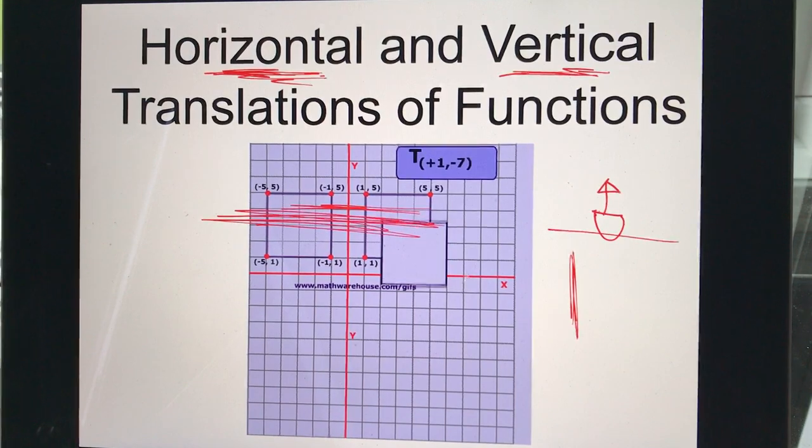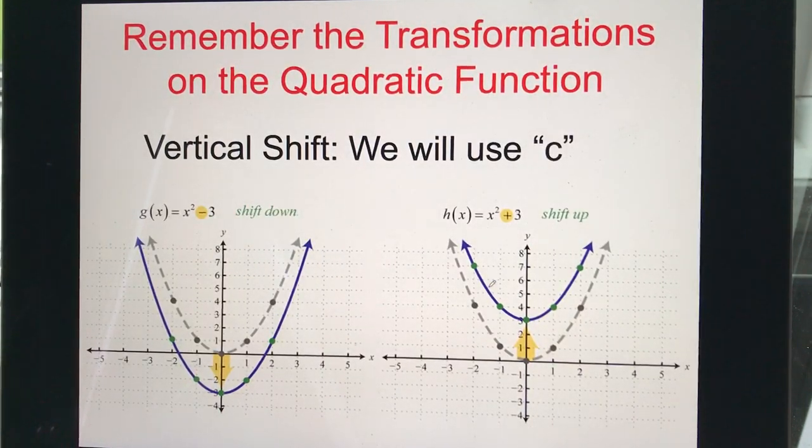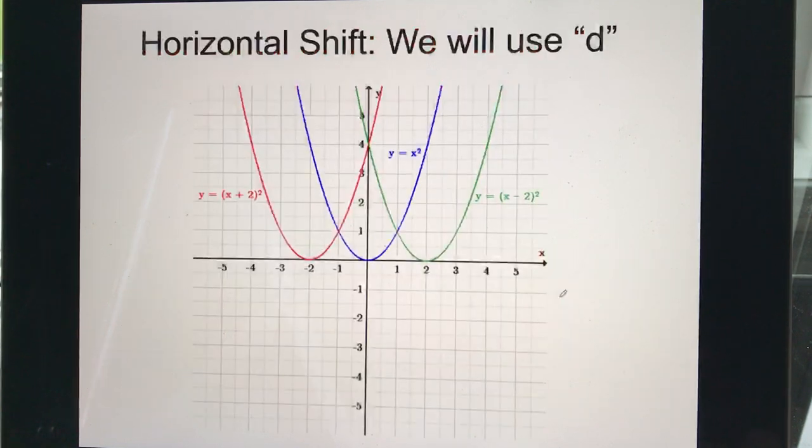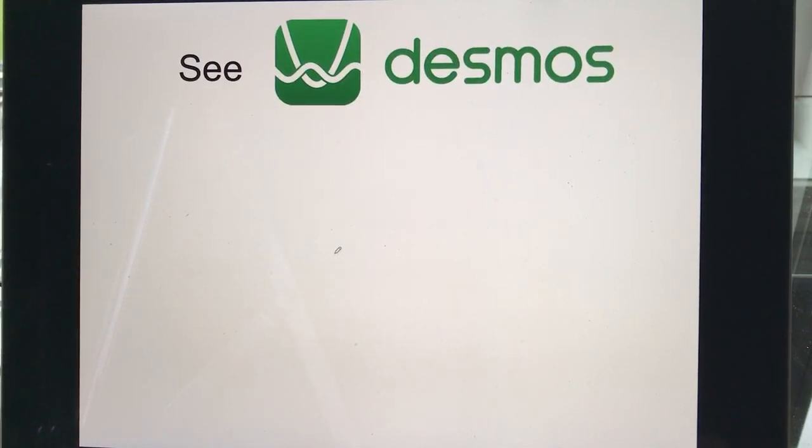Remember for the vertical shift or vertical translation we use the letter c. So here's our basic quadratic, if it was minus three the function just slid down three units, or if it was plus three the function slid up three units. For a horizontal shift we ended up using d. So here's our basic quadratic, if it was x minus two it shifted to the right two, if it was x plus two it shifted to the left two.